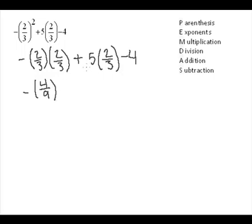Here we can make the five into a fraction by writing one underneath. So we have five times two which is ten and one times three which is three.